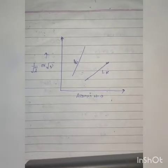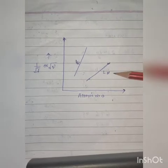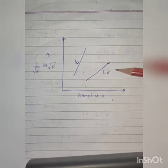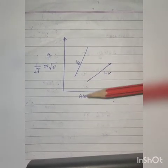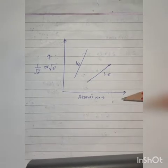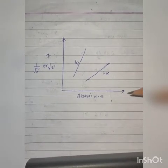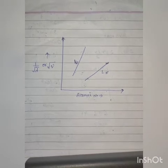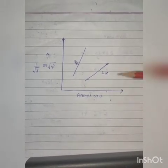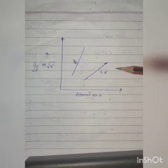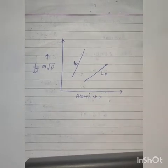Similarly, he observed it for the L-alpha line. The graph between the square root of the frequency and the atomic number Z for the L-alpha lines also gives a straight line.